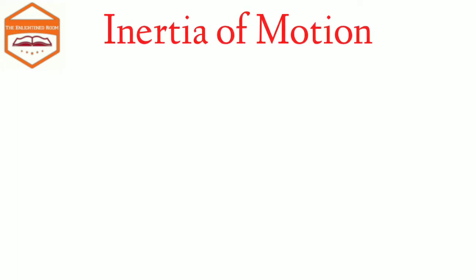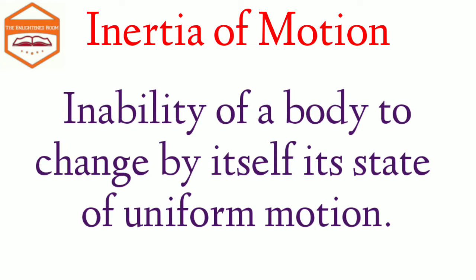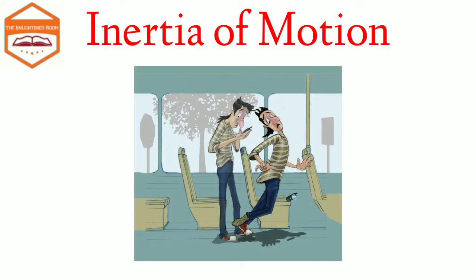Now let's talk about inertia of motion. Inertia of motion is the inability of a body to change by itself its state of motion. This means a body in motion remains in motion and cannot stop on its own. Rather, a body in motion opposes the forces which try to stop it. When a bus or train stops suddenly, the person sitting or standing inside tends to fall forward. This is because the lower part of his body comes to rest with the bus or train but the upper part tends to continue its motion due to inertia of motion.